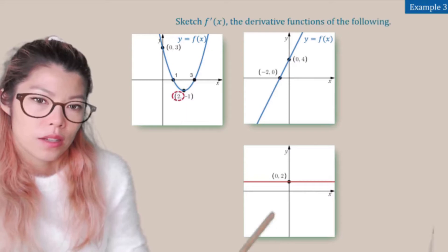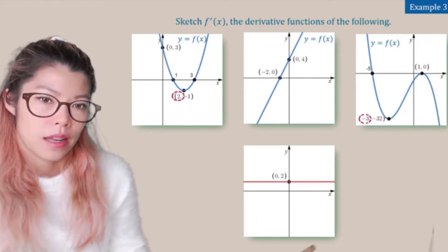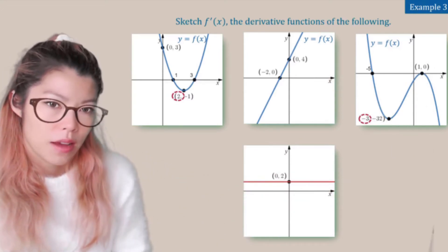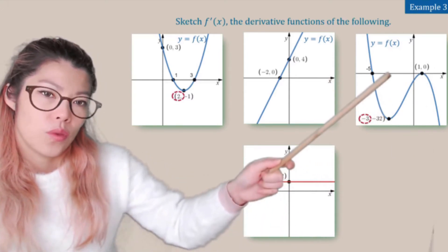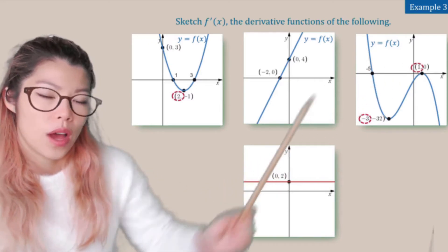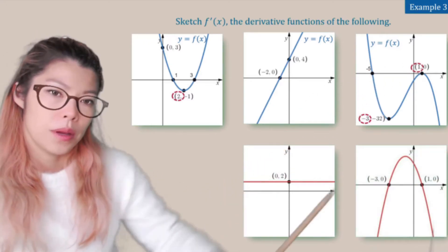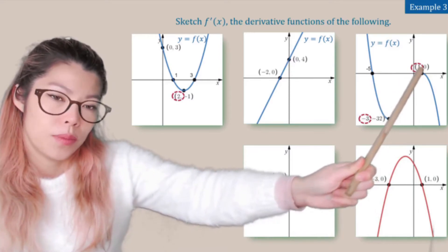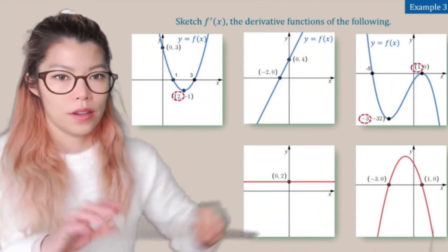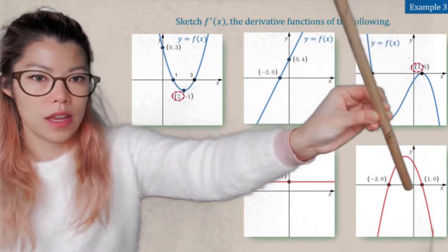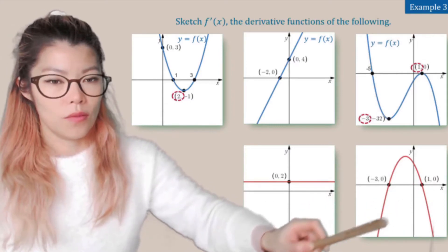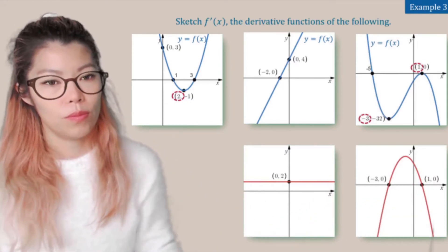Example 3 continued — let's fill in the last graph. For this upside-down shape, negative 3 is where the gradient is zero, and also at 1 the gradient is zero. In between, the gradient is positive so the derivative is up. Before and after those points, the gradient is negative, so the y value for the gradient function is down there.